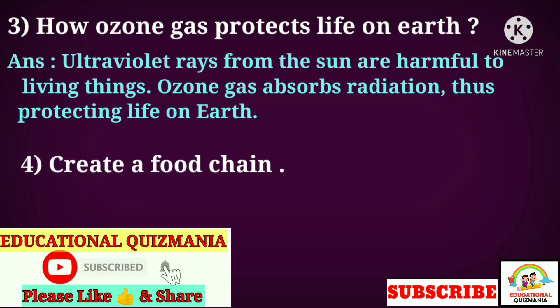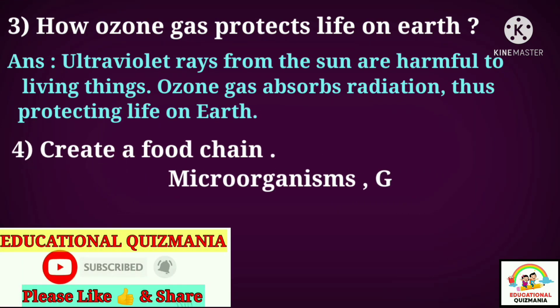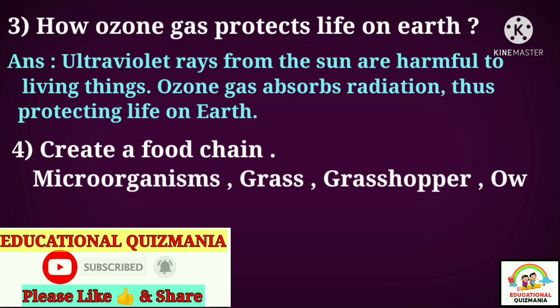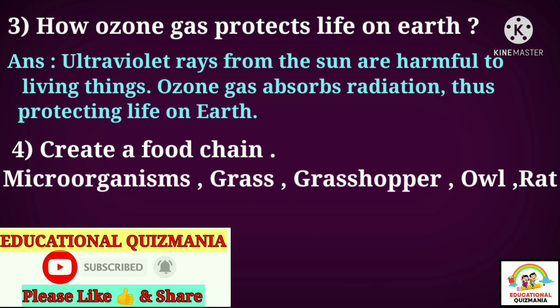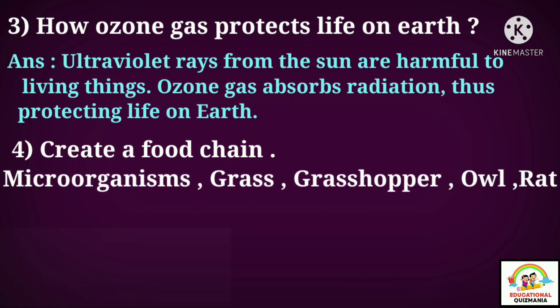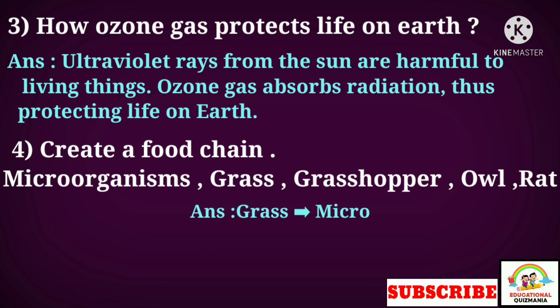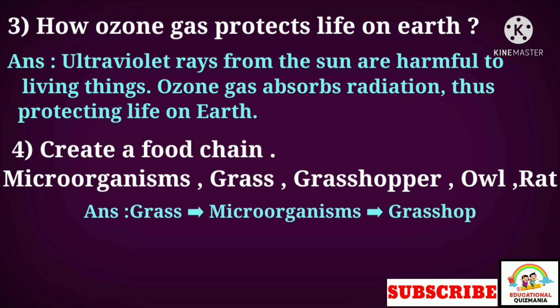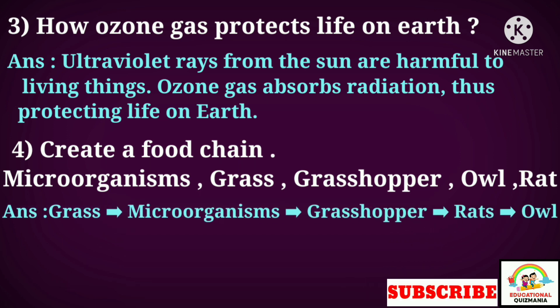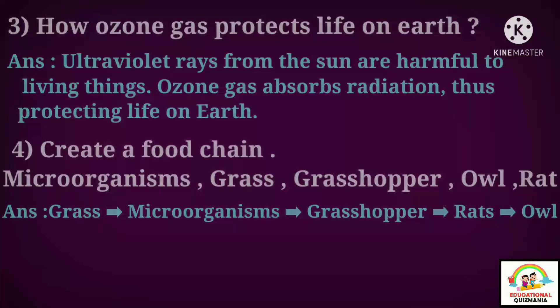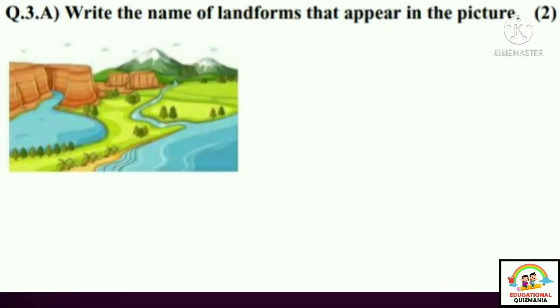Question four: Create a food chain using microorganisms, grass, grasshopper, owl, and rat. Answer: The food chain is grass → grasshopper → rat → owl, with microorganisms as decomposers.